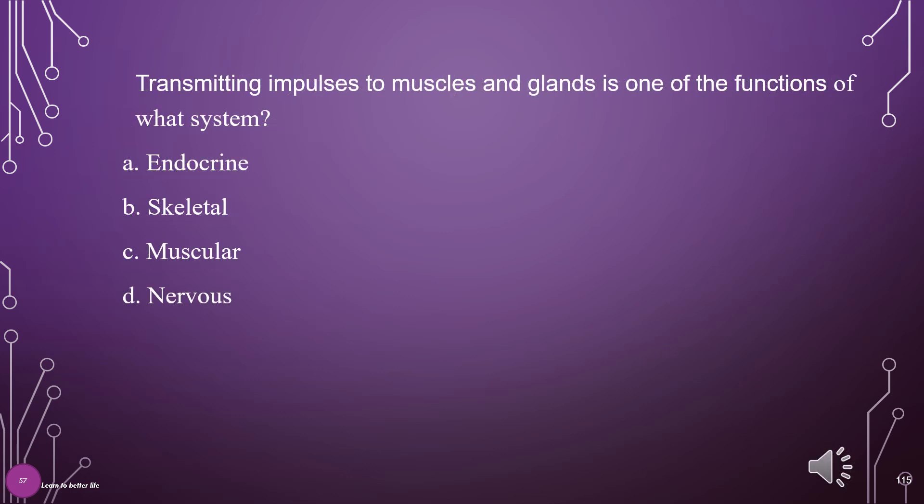Transmitting impulses to muscles and glands is one of the functions of what system? A. Endocrine, B. Skeletal, C. Muscular, D. Nervous. The answer is D: Nervous System.